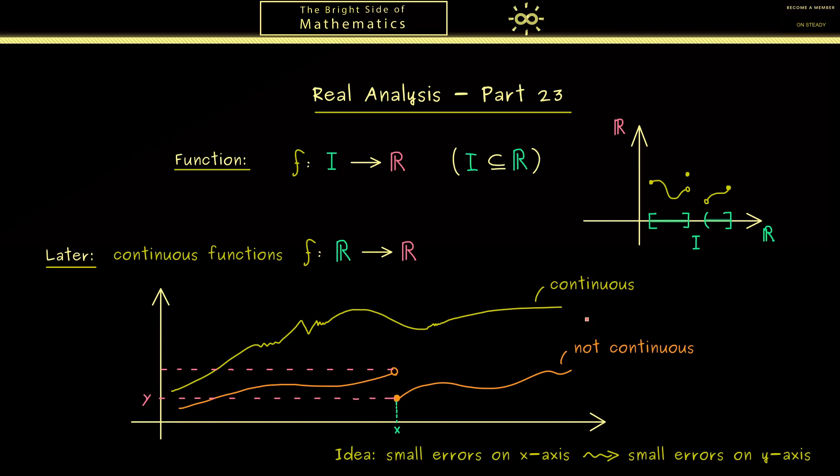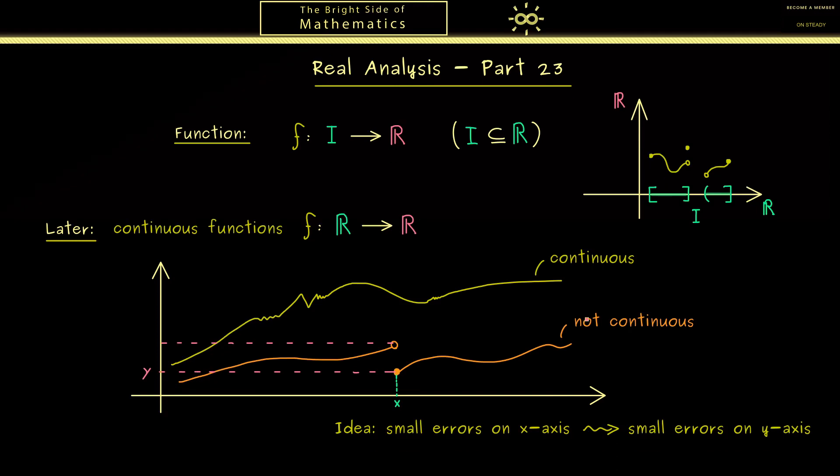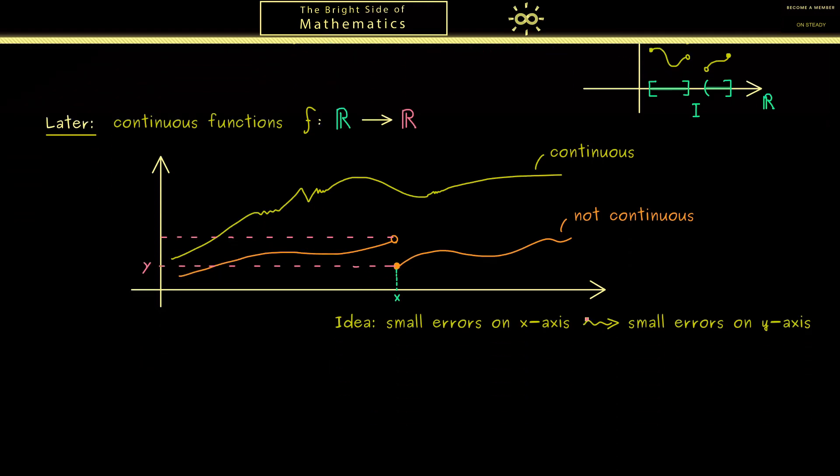However, before we define this maybe complicated property, let's first talk about some simpler properties. First, let's discuss what a bounded function is. Here again we have a function that maps the points from a given set I into R. And now we simply call this function f bounded if the range of this function is a bounded set.